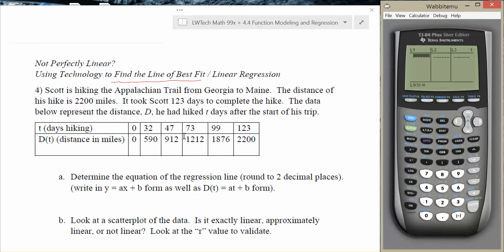The next thing that we would like to do is to go ahead and input our data points. Now the way you do this is very important. The input values should always go into L1, and in this case our input values are going to be our time T, how many days we spent hiking. Our output value is going to go into L2, and in this case that's going to be the distance in miles. Basically what we're looking at in this situation, we have Scott hiking the Appalachian Trail from Georgia to Maine. The distance of his hike is 2,200 miles. It took Scott 123 days to complete the hike. The data below is representing the distance D that he hiked T days after the trip.